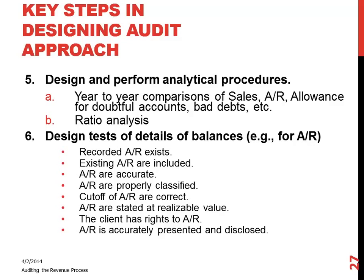You also want to make sure that accounts receivable is complete — that all accounts receivable that should be included have been included in the account — that it's accurate, and that it's properly classified. You're not reflecting intercompany sales or related party receivables in accounts receivable; it should only reflect trade receivables. You also check that the cutoff is appropriate, which you look at in conjunction with your testing of cutoff related to sales, and that accounts receivable is stated at its net realizable value — that's your testing of the allowance for doubtful accounts.